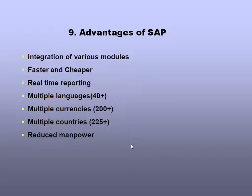Various advantages of SAP include: integration of various modules is quite good; faster and cheaper implementation because more than 1,000 ready-made processes are available — you adopt and modify a process per customer requirements without building from scratch, which is what we call RAD (Rapid Application Development); real-time reporting — data created just now can be used for reporting; multiple language support with 40+ languages and 200+ currencies across more than 225 countries; and reduced manpower — you can process the same application with the same or increased efficiency.